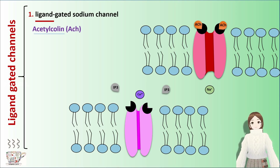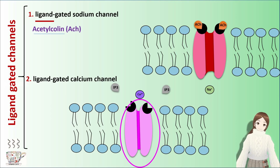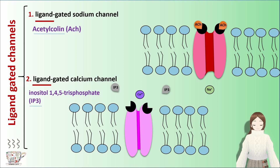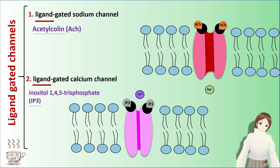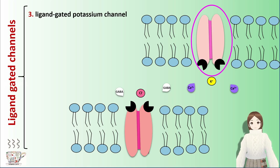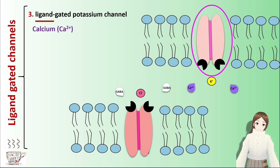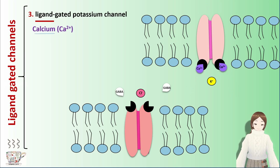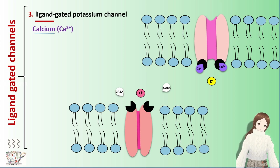Another example of ligand gated channels is the ligand gated calcium channel, which opens with inositol-1,4,5-trisphosphate, or IP3. Another example is the ligand gated potassium channel, which opens with calcium. Calcium ions as the ligand attach to the channel receptor, then the channel opens and potassium ions transfer across the cell membrane.